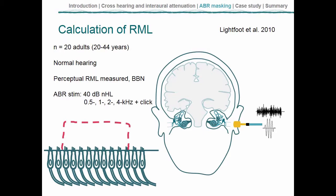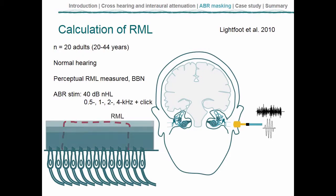For this reason, we measure the RML not for a narrowband masking sound as in pure tone audiometry, but for a broadband signal. They presented the ABR stimuli at a comfortable volume via inserts or supra-aural headphones, then gradually increased the level of a broadband masker until the ABR stimuli could no longer be detected by the participants. That gives us the relationship between the masker level needed to mask the different types of stimulus — that's the RML.